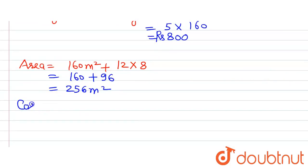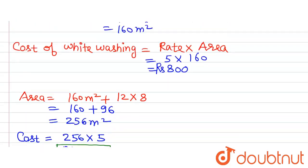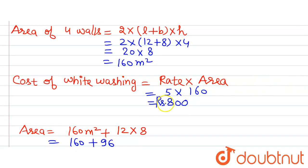The cost of whitewashing the 4 walls and the ceiling = area × rate = 256 × 5 = rupees 1280. So the cost of whitewashing 4 walls plus ceiling is rupees 1280, and the cost of whitewashing only the 4 walls is rupees 800. Both questions have been answered. Thank you.